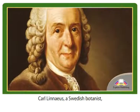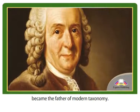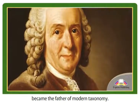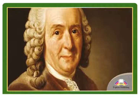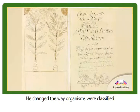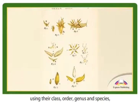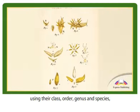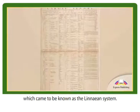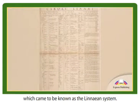In the 18th century, Carl Linnaeus, a Swedish botanist, became the father of modern taxonomy. He changed the way organisms were classified using their class, order, genus, and species, which came to be known as the Linnaean system.